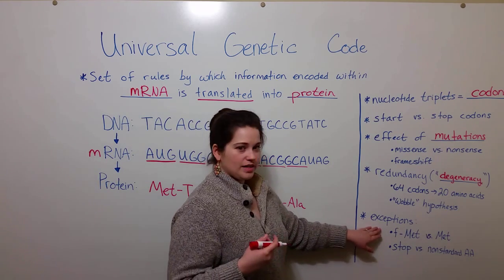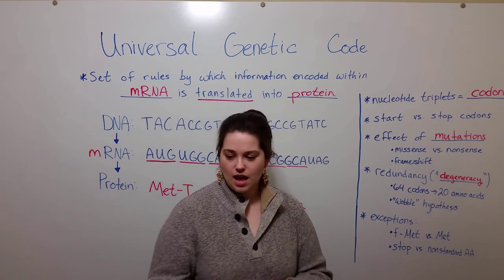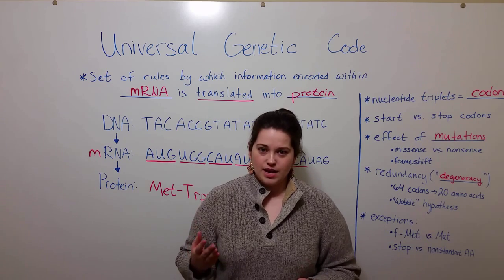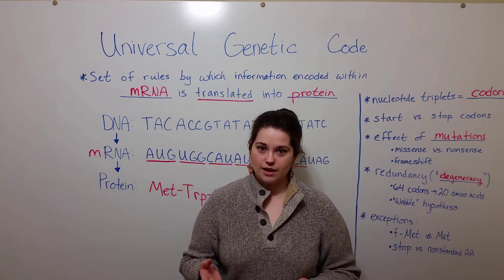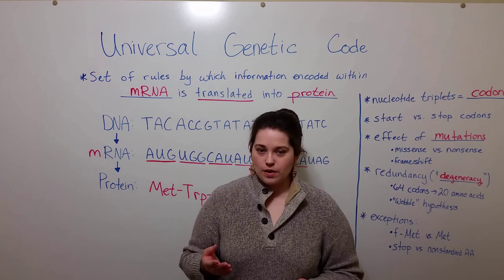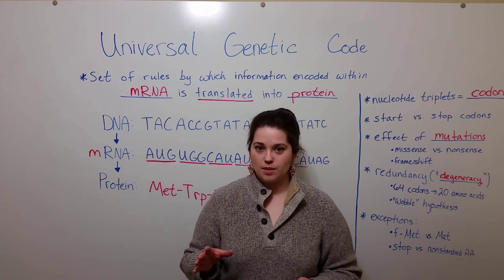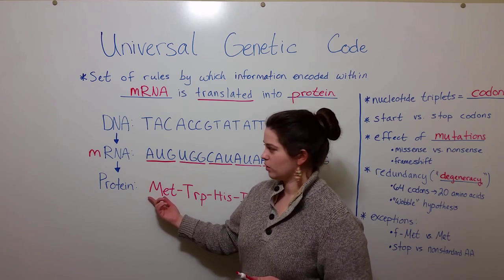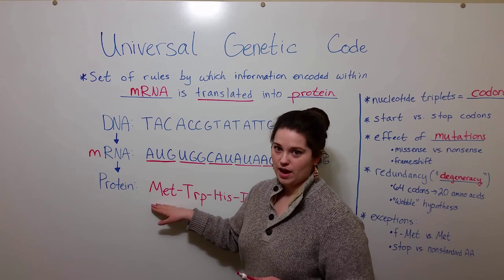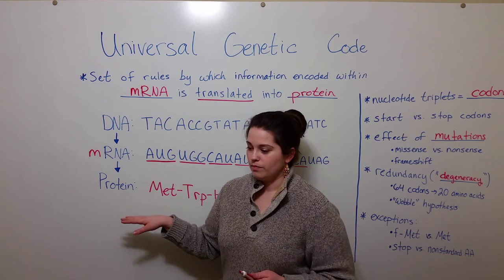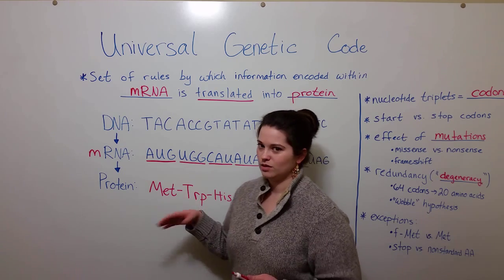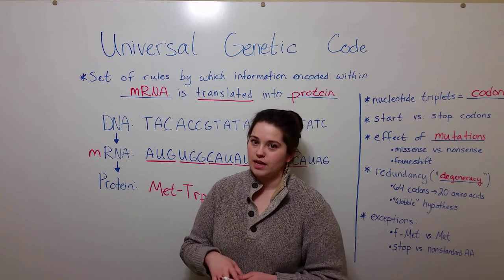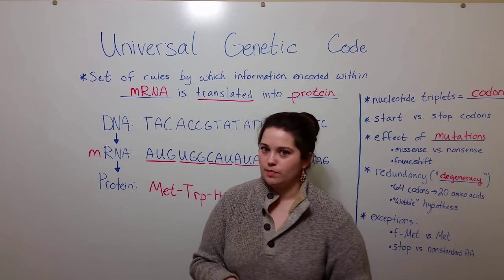Before we end, let's talk about a couple of exceptions to the genetic code. One of the cool things about the genetic code is that it is used by virtually all living organisms — it's one of the pieces of evidence for the common descent of all life from one previous ancestor. However, a few organisms have developed changes over time. For example, eukaryotic cells use methionine as their start codon, so AUG codes for methionine as the first amino acid. Bacteria, on the other hand, tend to use a modified methionine known as formyl-methionine, and the formyl group can often be removed in post-translational modifications.